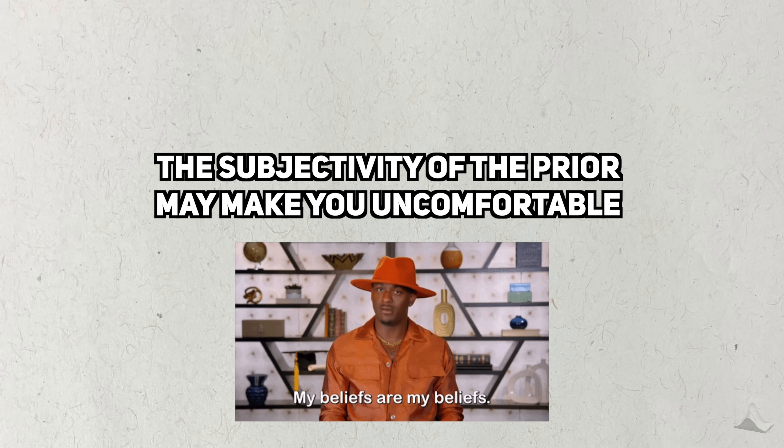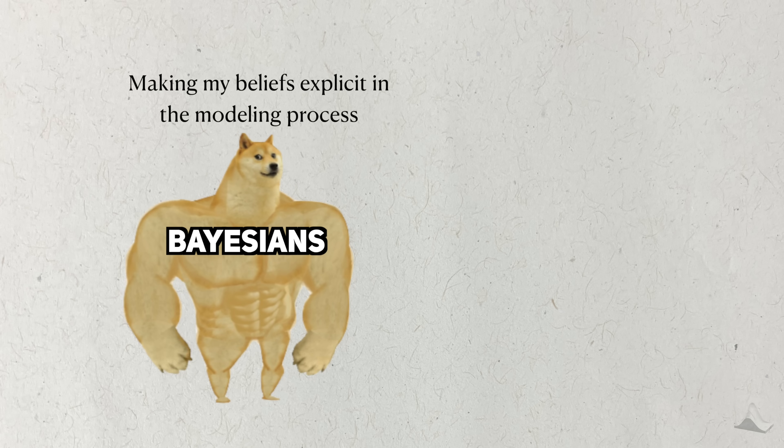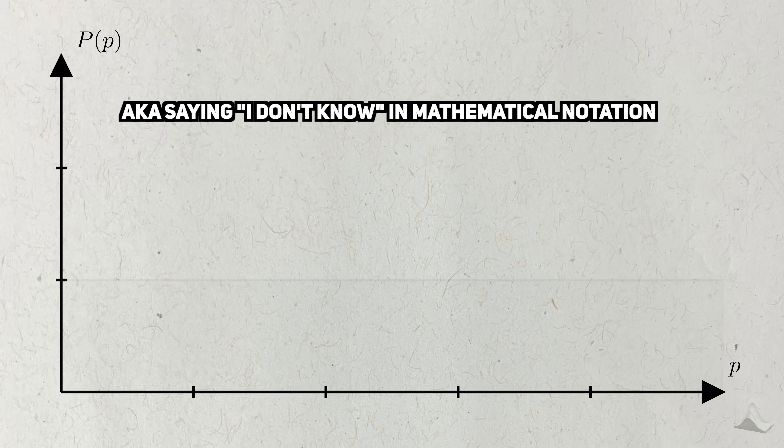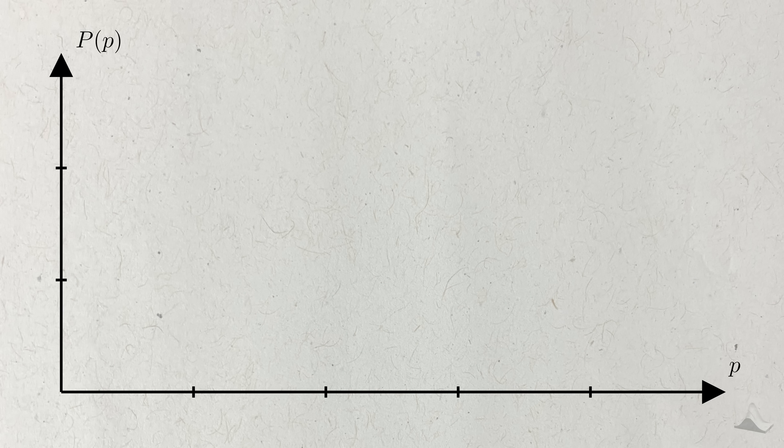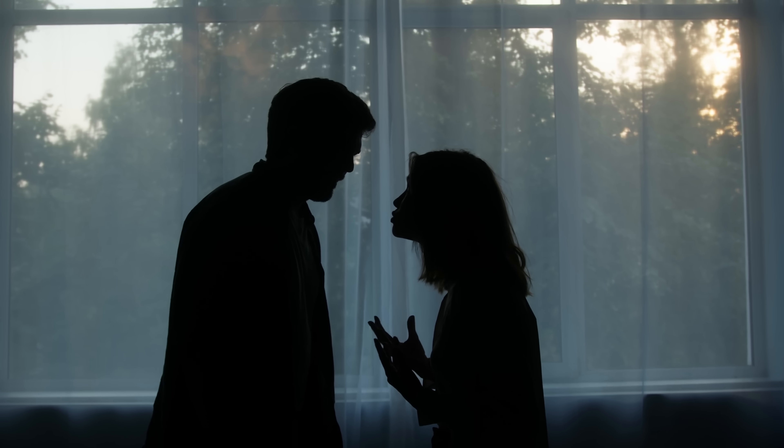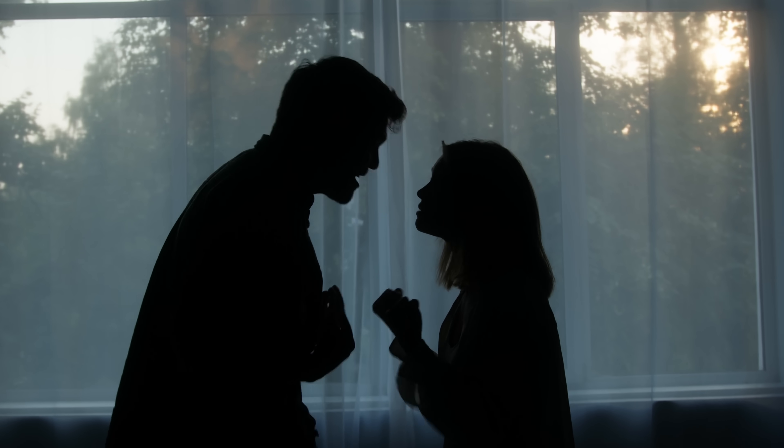Between these two extremes of uninformative and informative, there's a spectrum. The subjectivity can make some people uncomfortable, but the prior is what makes Bayesian statistics so powerful. It forces you to consider the probabilities of different parameter values before you collect any data, and make these probabilities explicit to others. Nothing will stop you from conducting an analysis with an extremely opinionated prior, but then someone can challenge your findings by challenging your prior, which opens up the possibility for discussion.